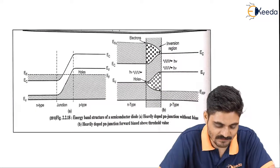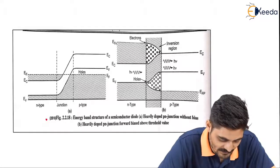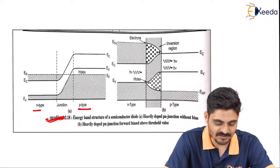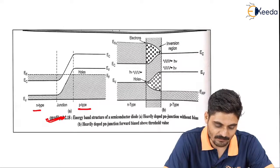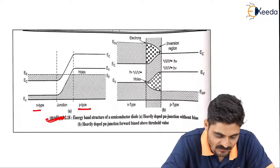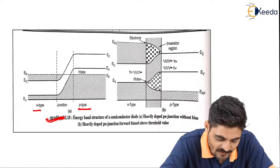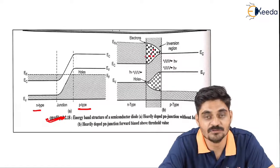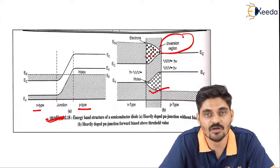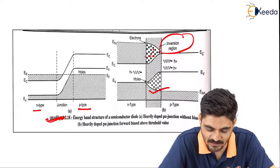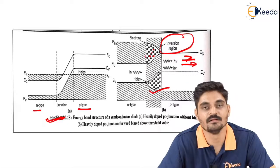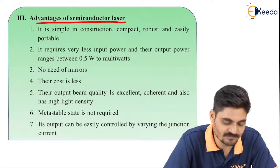Looking at the transition diagram: on the left we have N-type and on the right P-type, with the junction in between. When forward biasing is applied, electrons accumulate in the higher energy state, causing population inversion in the inversion region. Holes or vacancies are present on the lower level — that is, in the valence band — and their recombination emits the laser light.